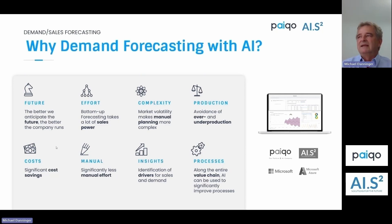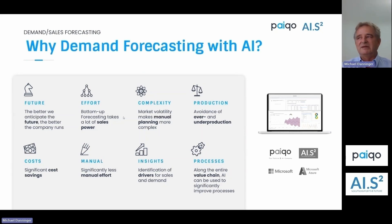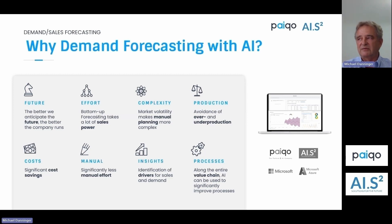The really important ones from my point of view are the effort-related ones. If you look at how companies do demand forecasting today, it's usually by letting sales people fill out Excel sheets about what they anticipate demand will be, and then aggregating that. So you take away a lot of sales power from your own organization and you get a result — and I will not comment on how good that result will be.